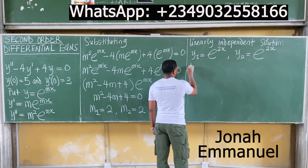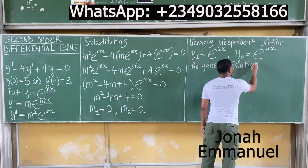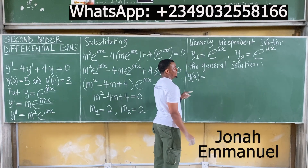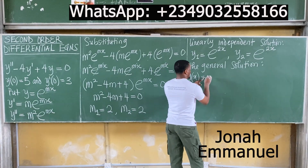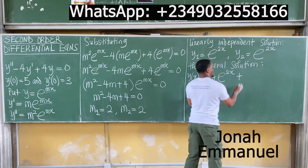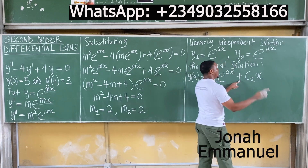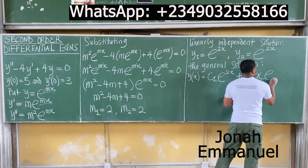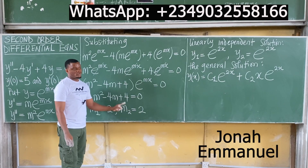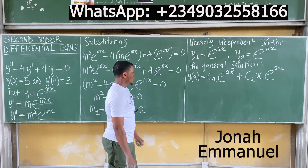Let's get the general solution. The general solution is given by y(x) equal to c1·y1, which is c1·e^(2x), plus c2 times x times y2, that's c2·x·e^(2x). Note that this extra x is added only when we have equal (repeated) roots — if we have distinct real roots, we do not add that.